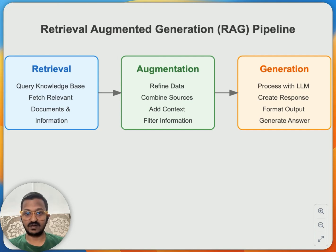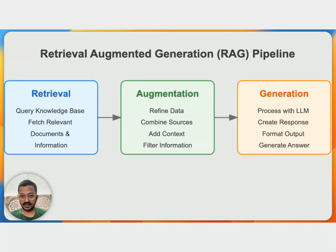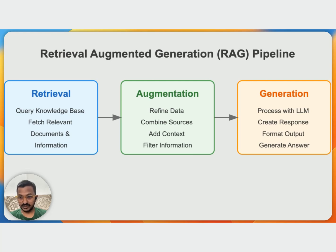Haystack is also an AI framework to help you build LLM-powered applications. So today in this video, we're going to see how you can build retrieval augmented generation systems using Haystack. Now that we know RAG is one of the prominent approaches to mitigate LLM hallucinating behavior, let's understand the RAG pipeline, which consists of three main stages: retrieval, augmentation, and generation.